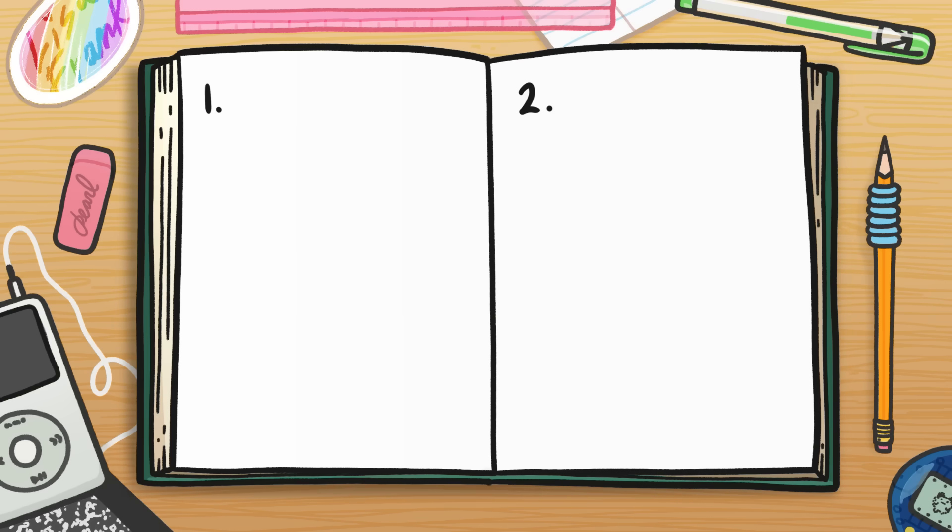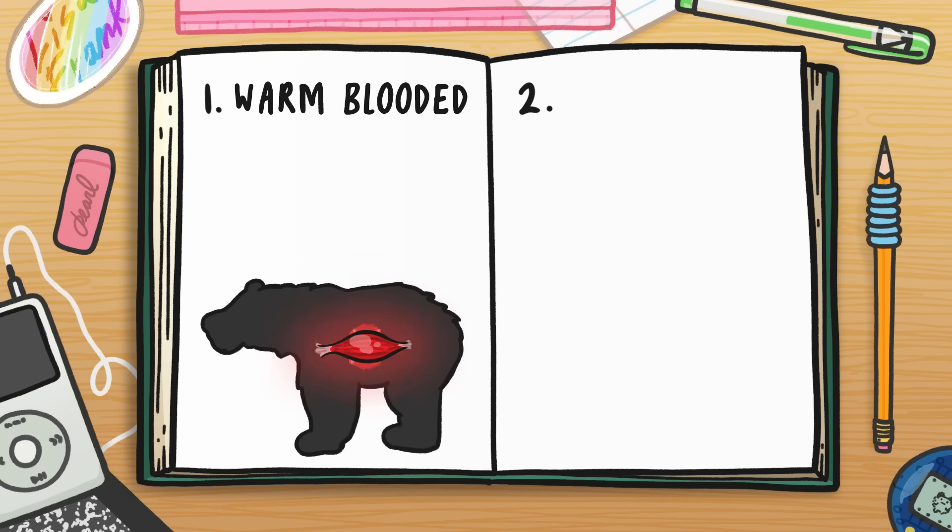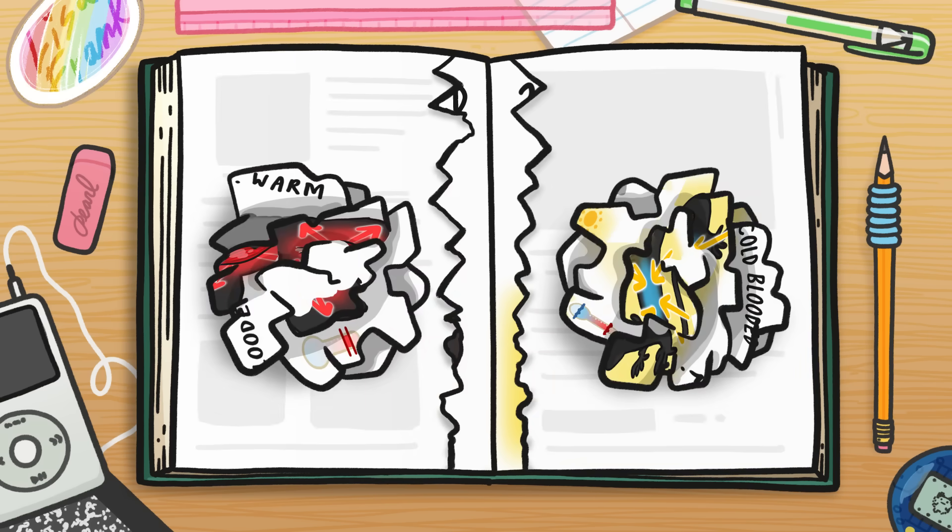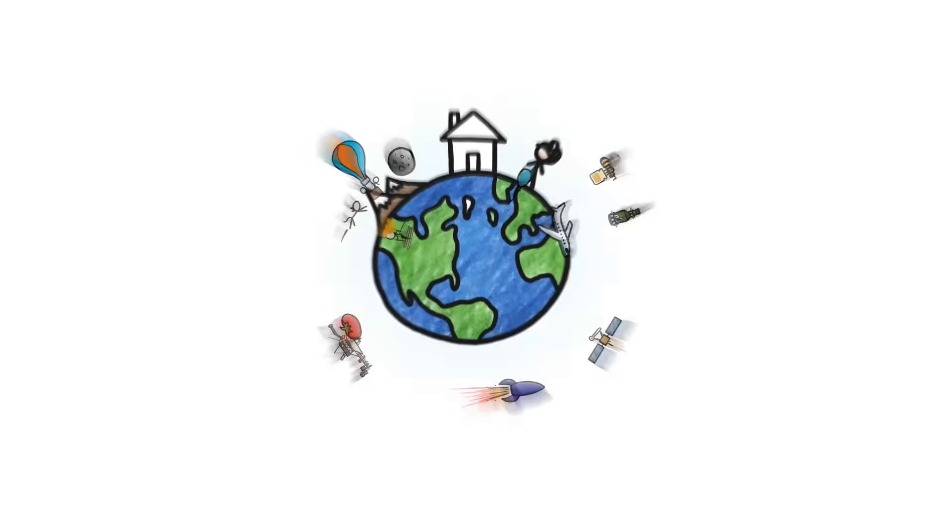You probably learned that there are two types of animals. Warm-blooded ones, which generate heat internally and keep their bodies at a consistent temperature, and cold-blooded ones, which rely on the environment for heat and have body temperatures that fluctuate. But that's basically wrong. I'm David, and this is MinuteEarth.